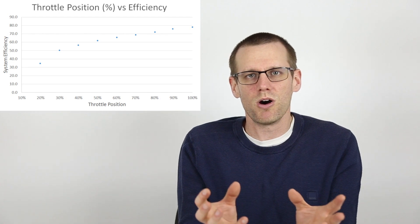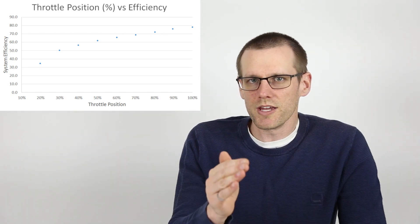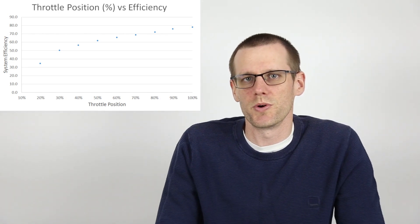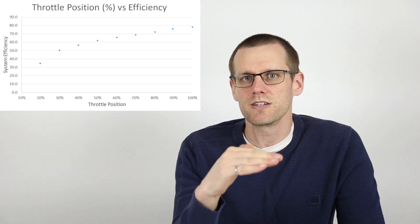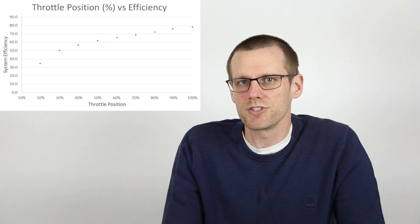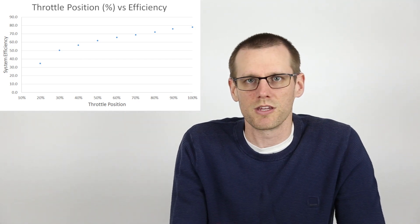Here's the graph of what we ended up coming up with. The relationship is very straightforward. Essentially as you go from 100% throttle down to the lowest percentage of throttle, your efficiency is going to very quickly decrease.